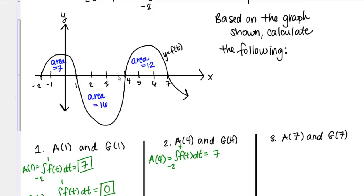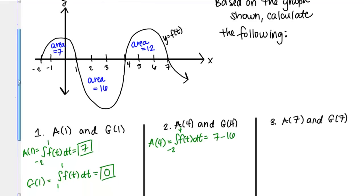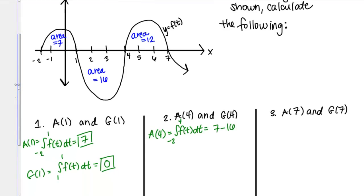Then look, from 1 to 4, my region is below the axis and it has a total area of 16, but because it's below the axis, it's going to be a negative contribution to the net area. Then I'm going to end up with 7 minus 16, which is going to give me negative 9 as the net area from negative 2 to 4.